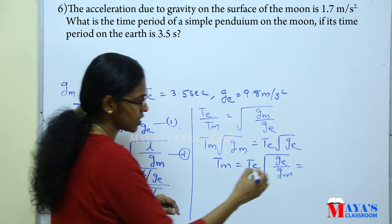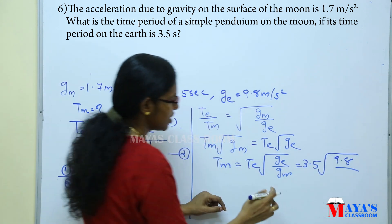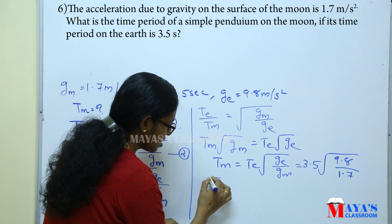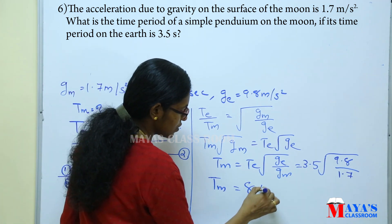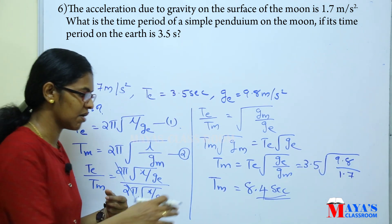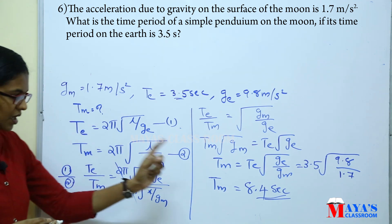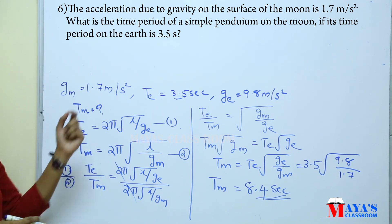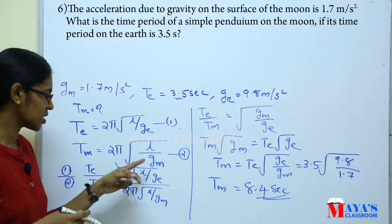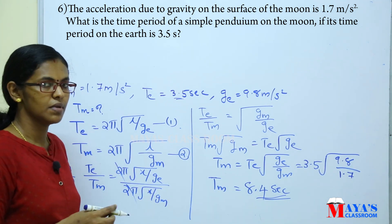The time period on Earth is 3.5 seconds, g_earth is 9.8 and g_moon is 1.7. Calculating this gives a time period on the moon of approximately 8.4 seconds. The gravity is fixed on the moon and so the time period will be fixed accordingly.